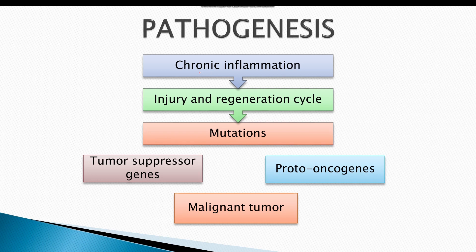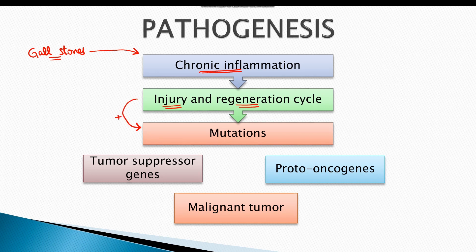Certain risk factors such as gallstones intermittently obstruct the gallbladder, resulting in chronic inflammation. In chronic inflammation, there is a repeated cycle of injury and regeneration of cells. This repeated injury and regeneration increases the risk of mutations.